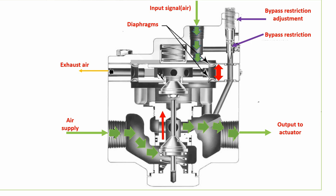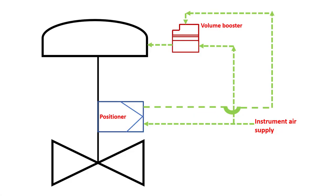There are two diaphragms inside the volume booster, and air balances between the two diaphragms. On the bottom side, instrument air supply comes in from the instrument air header. There will be forces applied between these two diaphragms. Once the input air signal enters the volume booster, there will be an imbalance in the diaphragm, which causes the plug to move upward. This lets the instrument air supply flow from the volume booster input to the output, which goes into the actuator. The volume booster takes the positioner output as an input signal and amplifies it into a direct air flow from instrument air supply to the actuator.